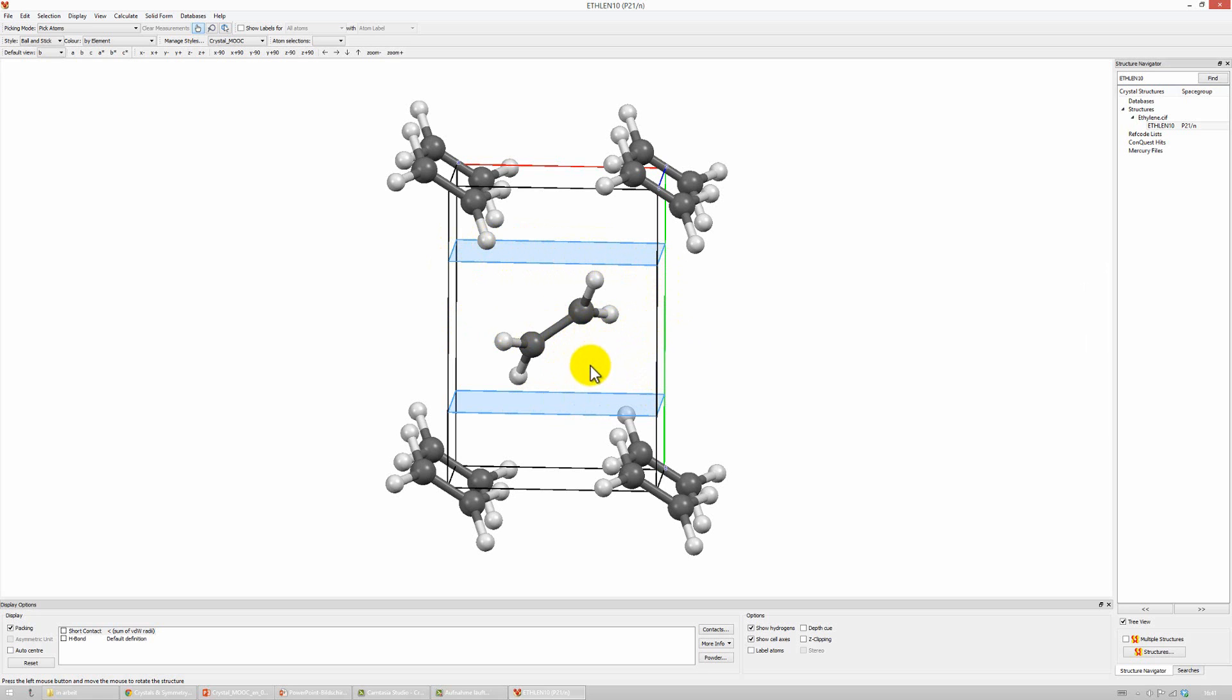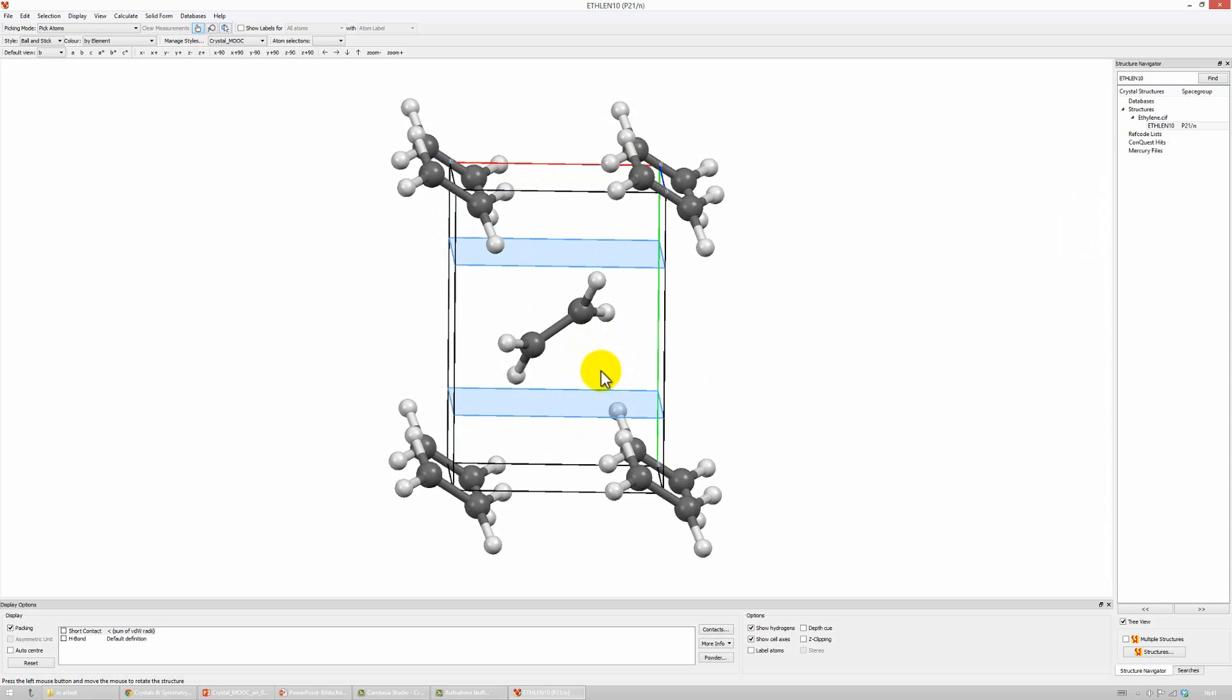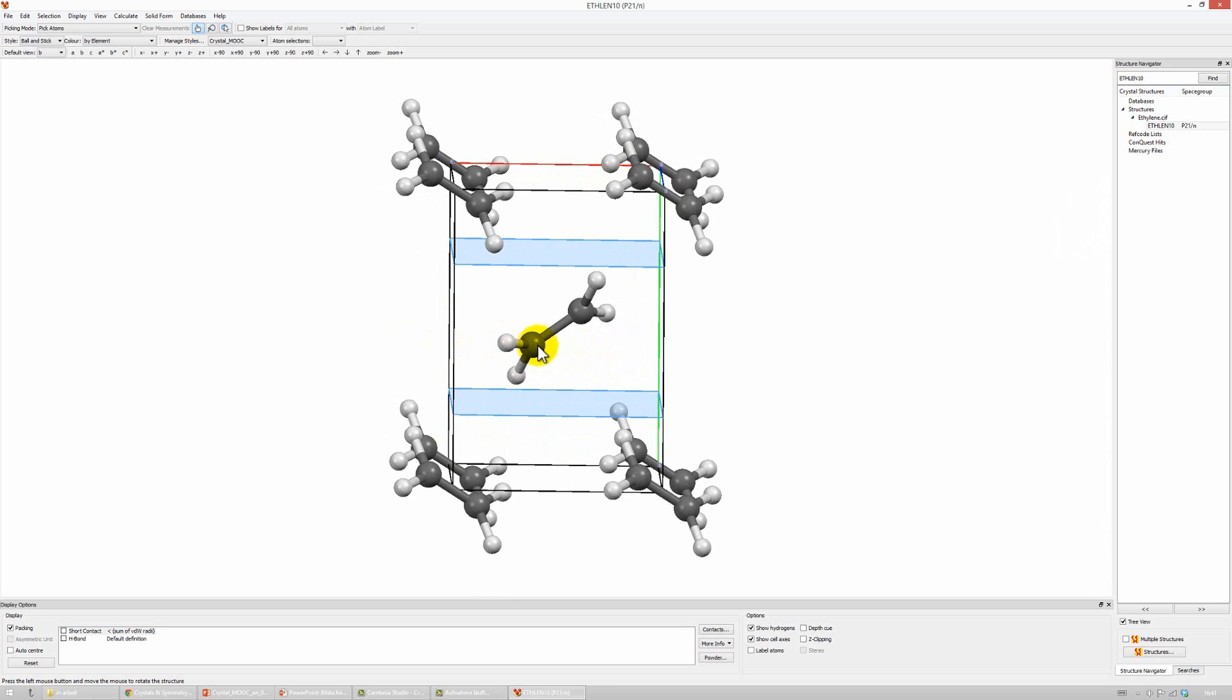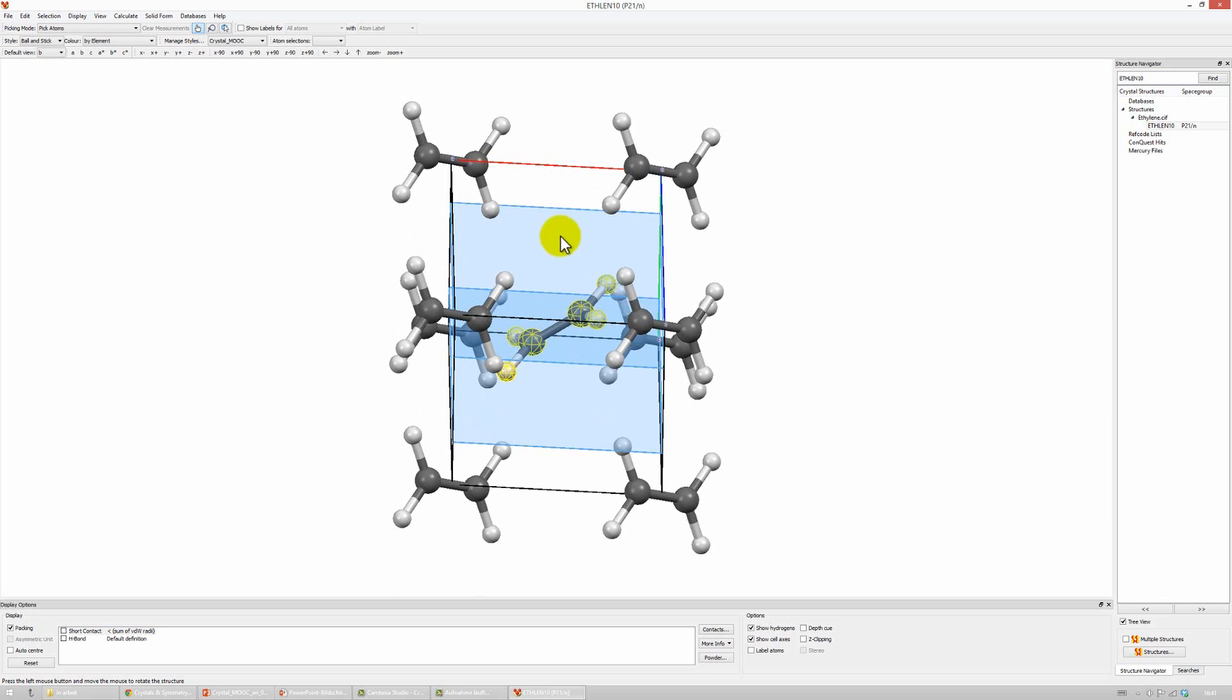How does this glide plane affect our ethylene molecule? It is a glide plane n, a diagonal glide plane. So, let's choose this ethylene molecule in the center. First, we have to reflect this molecule, then it lies in the same plane as this molecule at these corners, and then we have to translate the molecule both along the a and the c direction, in total a diagonal movement.